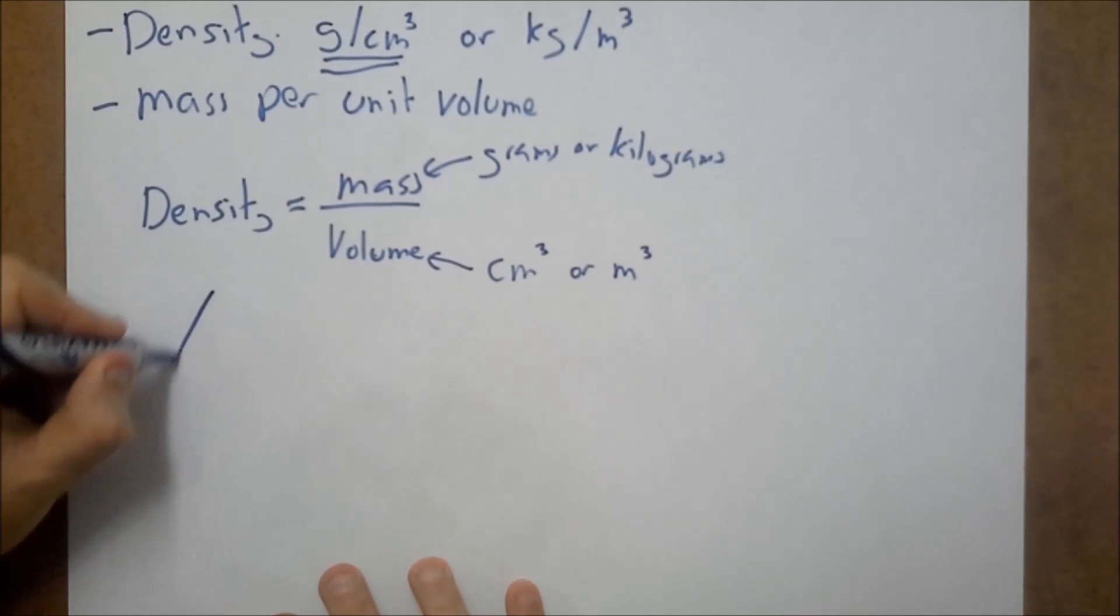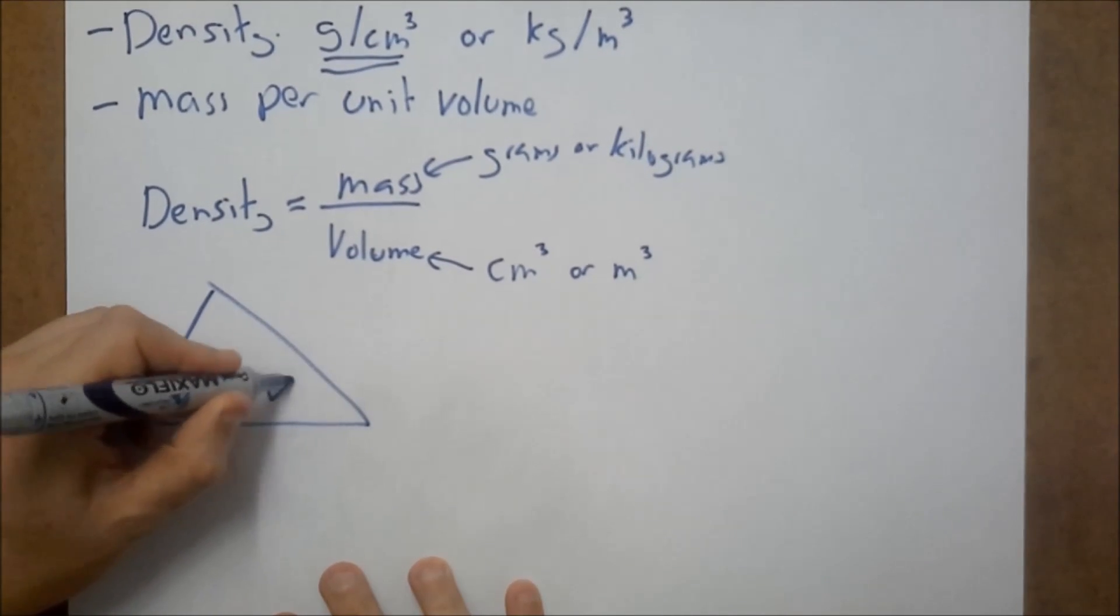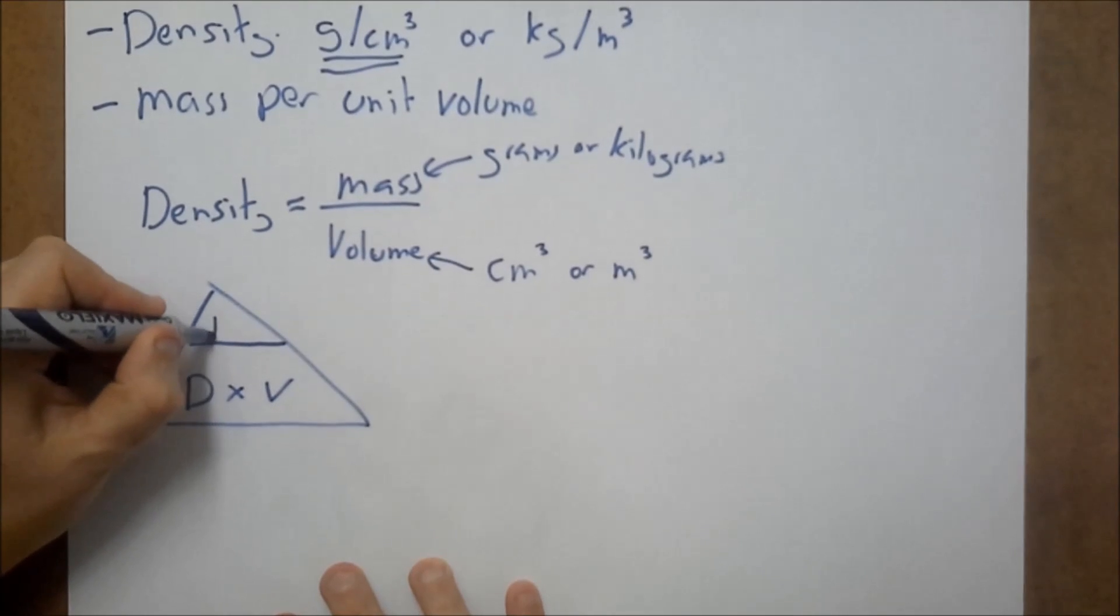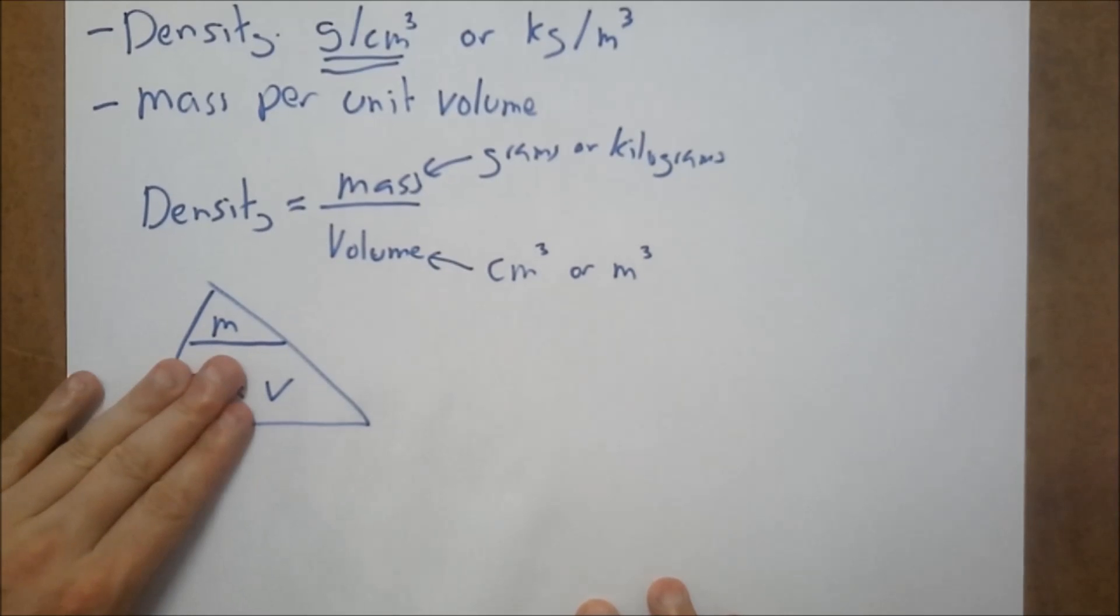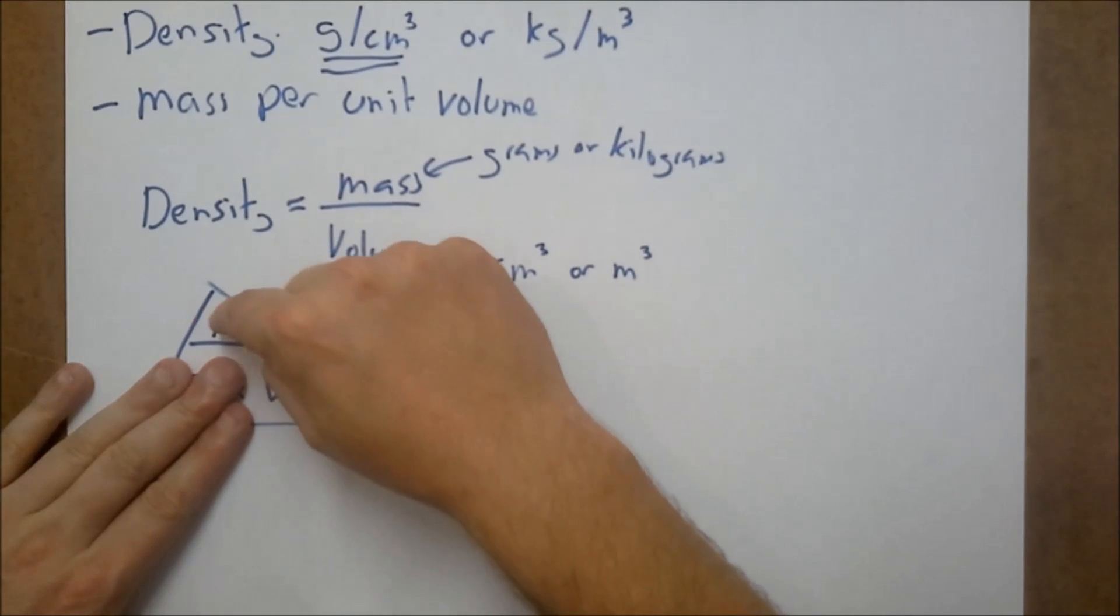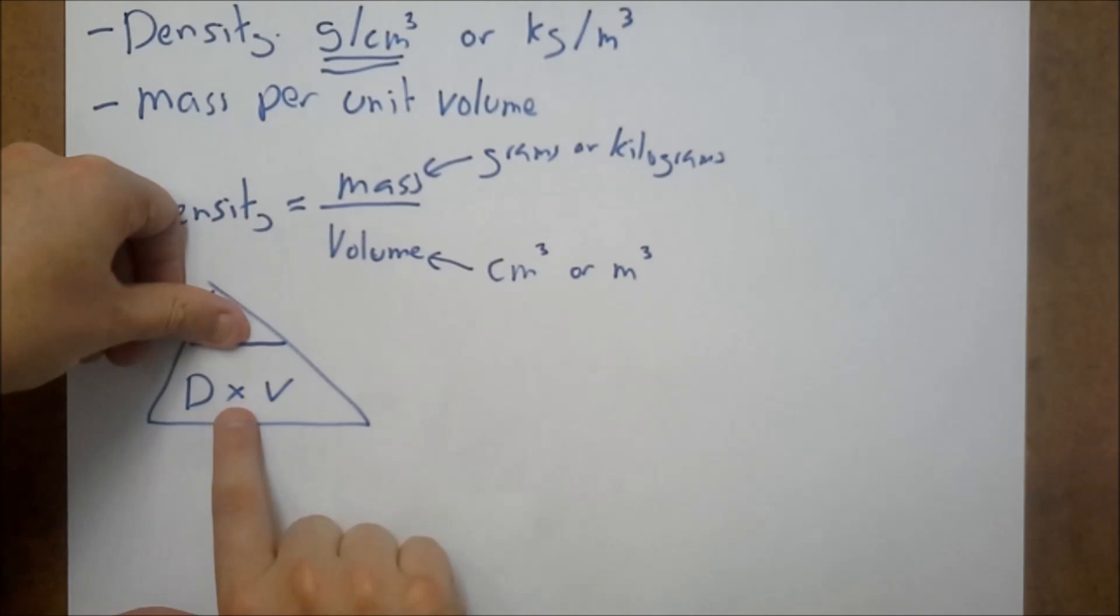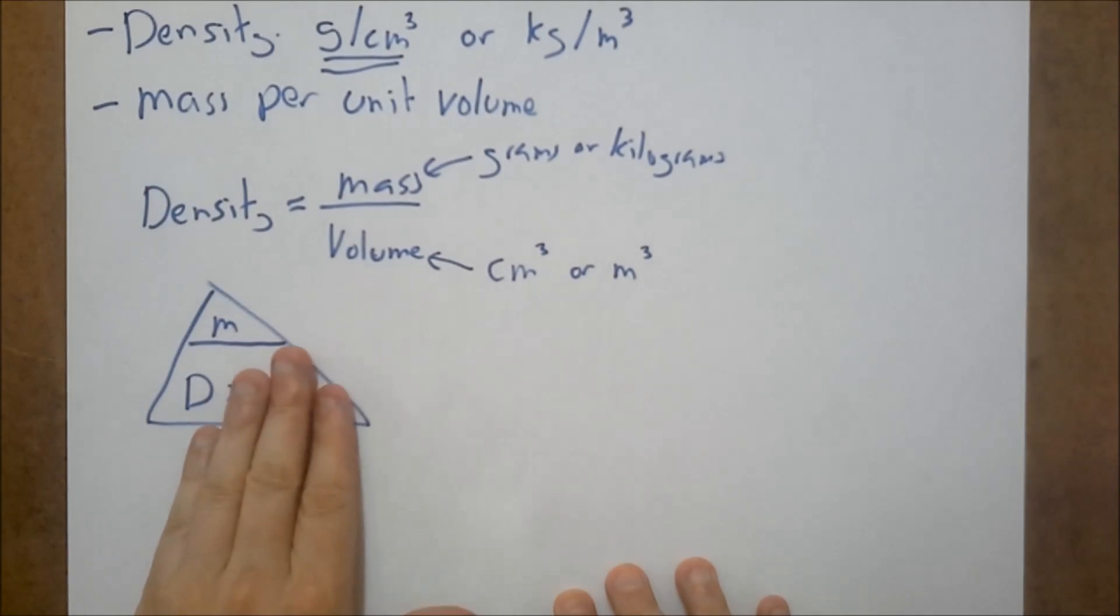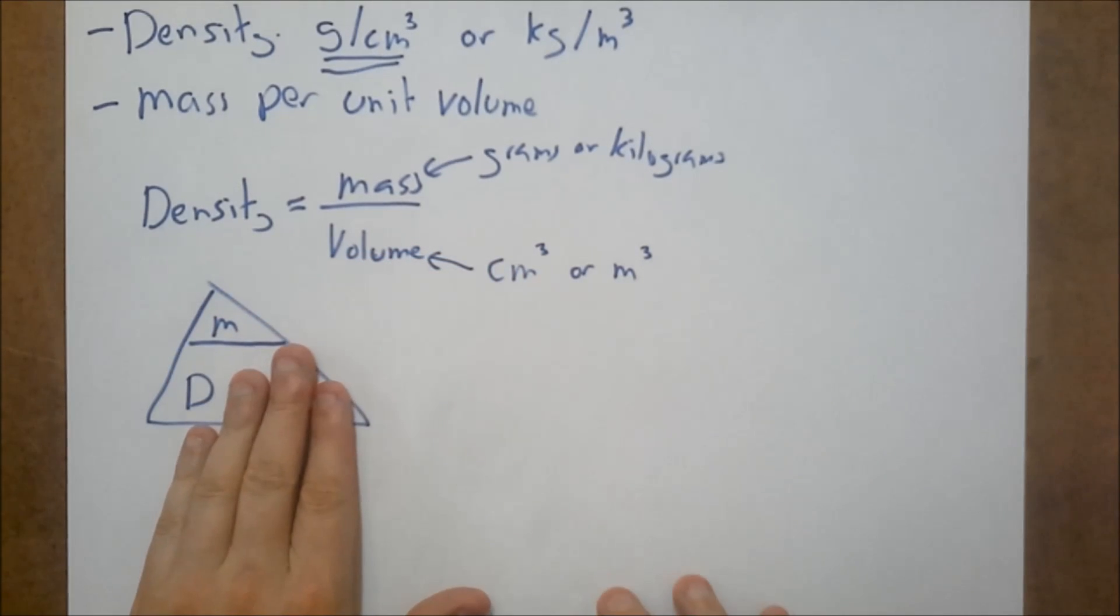Now the triangle, so this is density times the volume at the bottom here, and we have mass on the top. Now if you want to find out density, put your hand over the density, we do mass divided by volume. If you want to work out the mass of an object, density times by volume. If you want to work out the volume of a shape, you do the mass divided by the density.